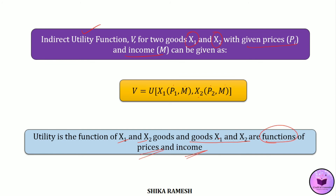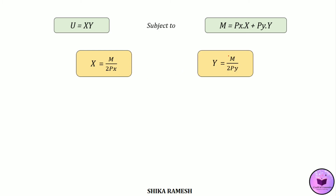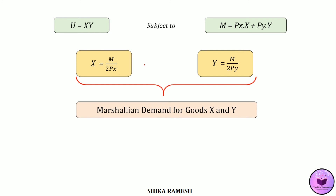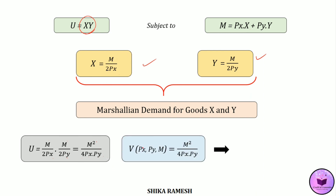Now we shall see how to derive an indirect utility function. Suppose the objective function is given as U = XY, which is a Cobb-Douglas utility function, subject to the budget constraint M = P_X · X + P_Y · Y. We know the Marshallian demand functions for good X and Y: X = M / (2P_X) and Y = M / (2P_Y). Substituting these Marshallian demand functions into the objective function U = XY, we get U = (M / 2P_X) · (M / 2P_Y) = M² / (4P_X P_Y), and this is the indirect utility function, written as V(P_X, P_Y, M) = M² / (4P_X P_Y).